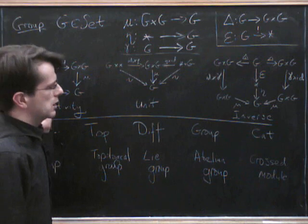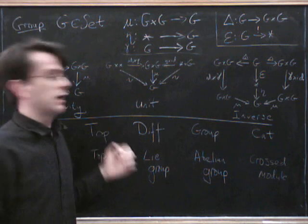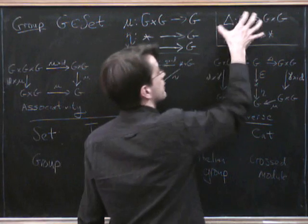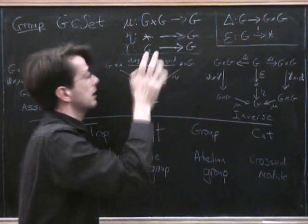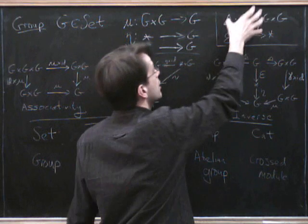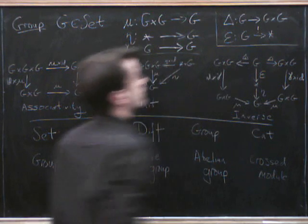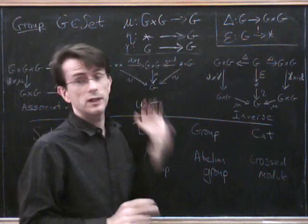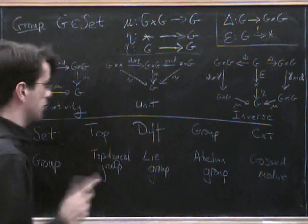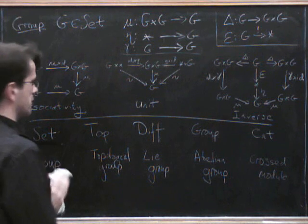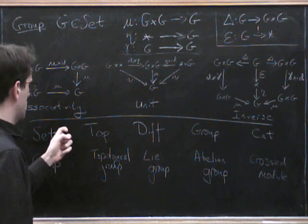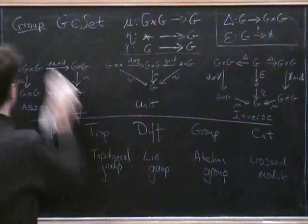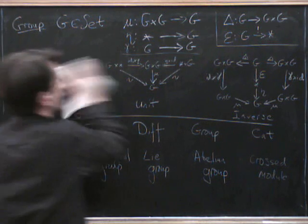But we often want to consider things that look like groups in monoidal categories which aren't Cartesian. And the big problem is we don't have this stuff around. I'll explain a little bit why we want to look at these next time. But we don't have these two things around. So we have to sort of work around not having these. And we'll see how we do that next time. So what I'd like to do this time is just explain an example of a monoidal category which isn't Cartesian.